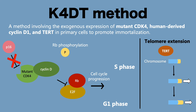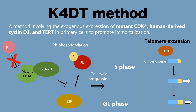The K4DT method involves the exogenous expression of mutant CDK4, human-derived Cyclin D1, and TERT protein in primary cells. With our method of immortalization, the P16 binding site on CDK4 is mutated to avoid the binding of P16 to the CDK4-Cyclin D1 complex. This leads to the phosphorylation of the RB protein, the release of E2F protein, and the progression of the cell cycle from G1 phase to S phase. In addition, we also inserted the TERT protein to maintain the length of the telomeres.